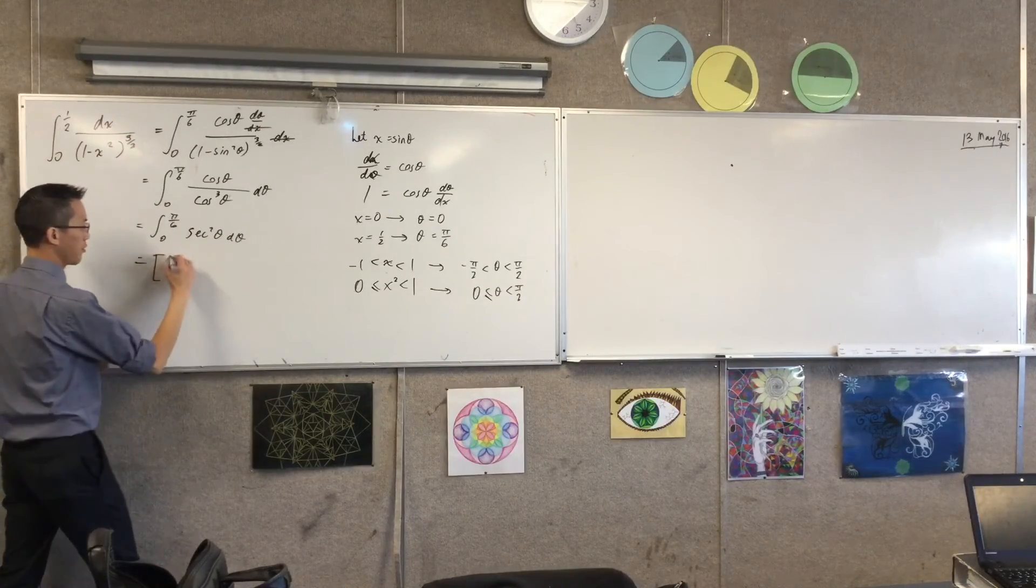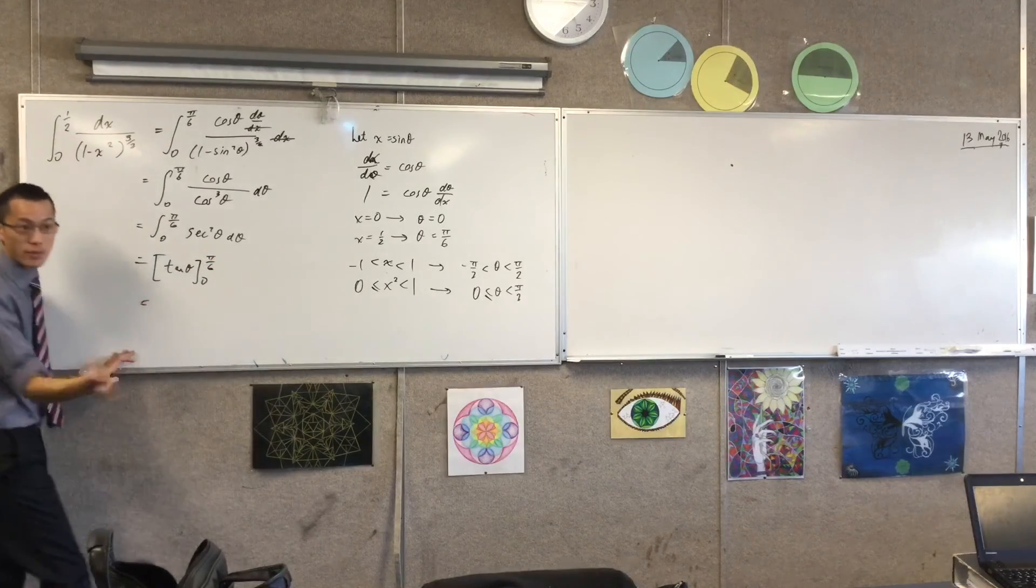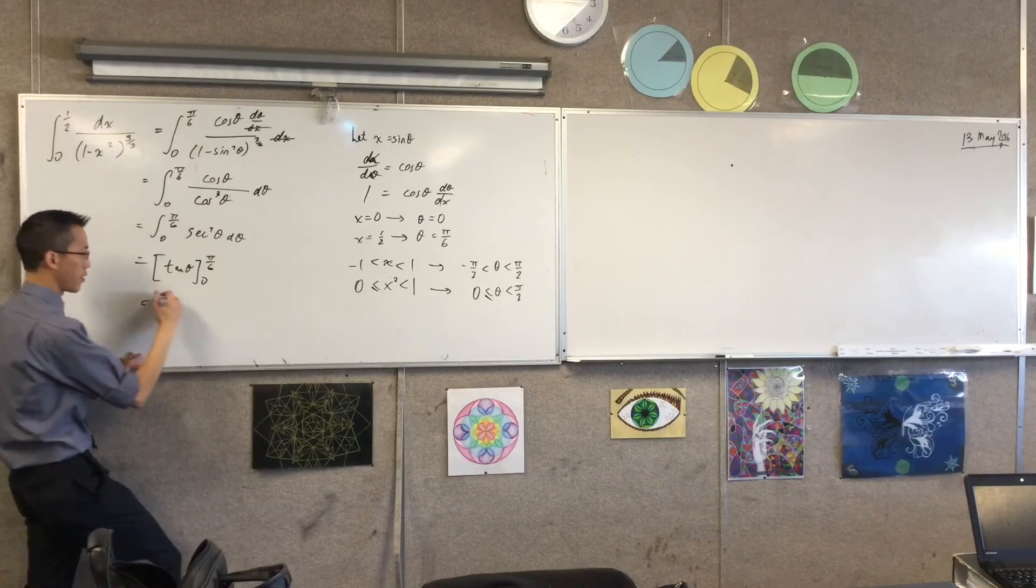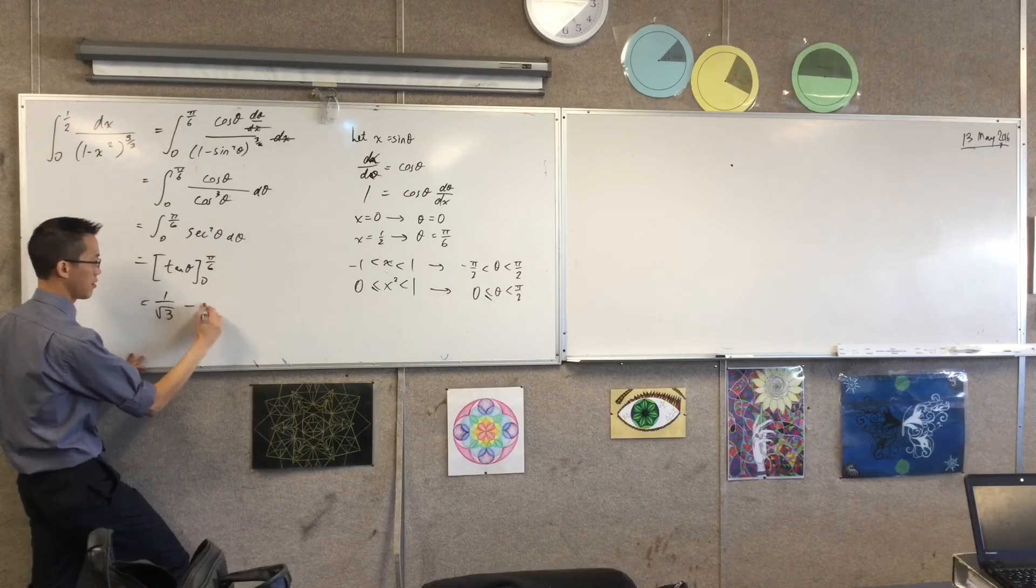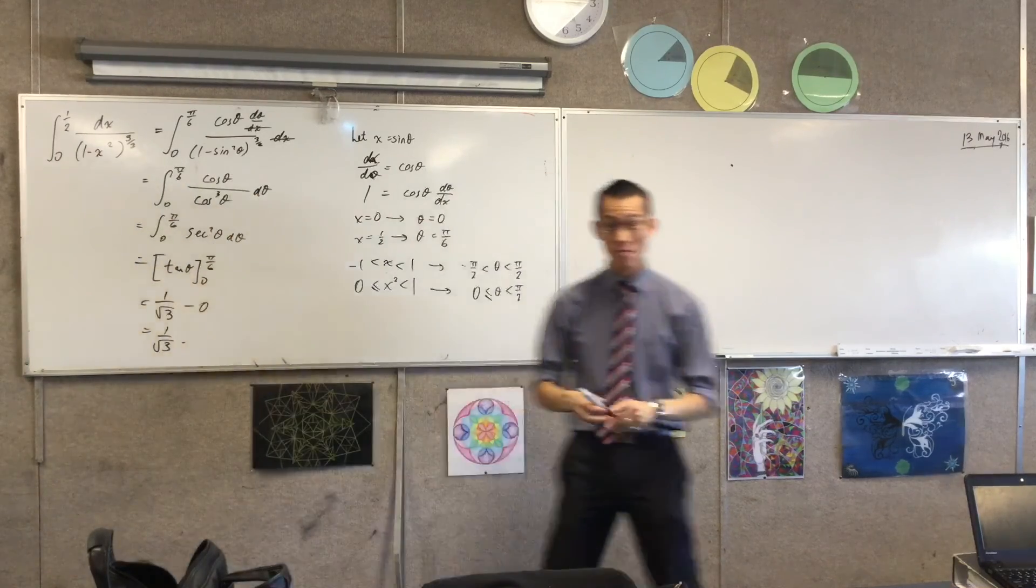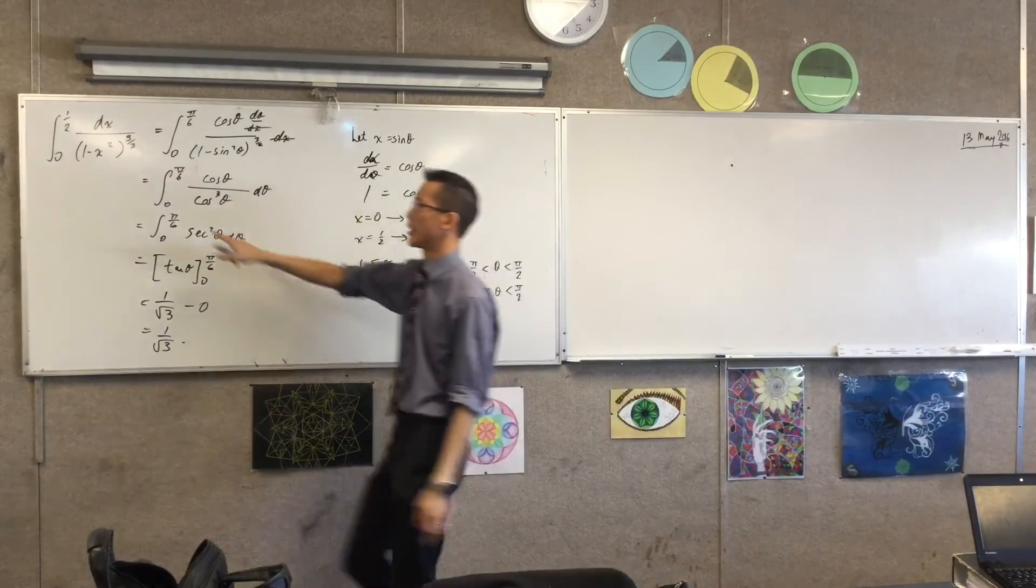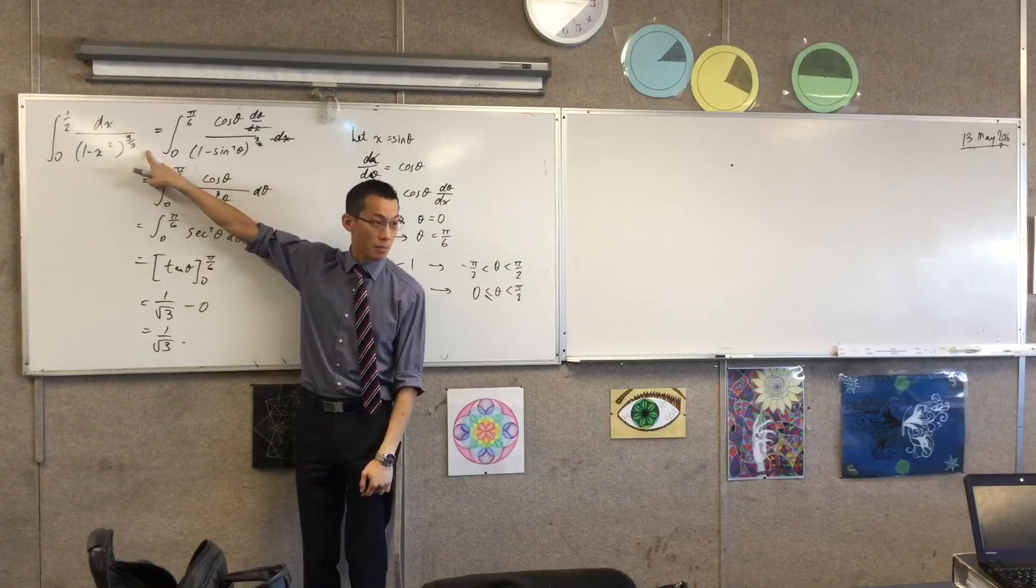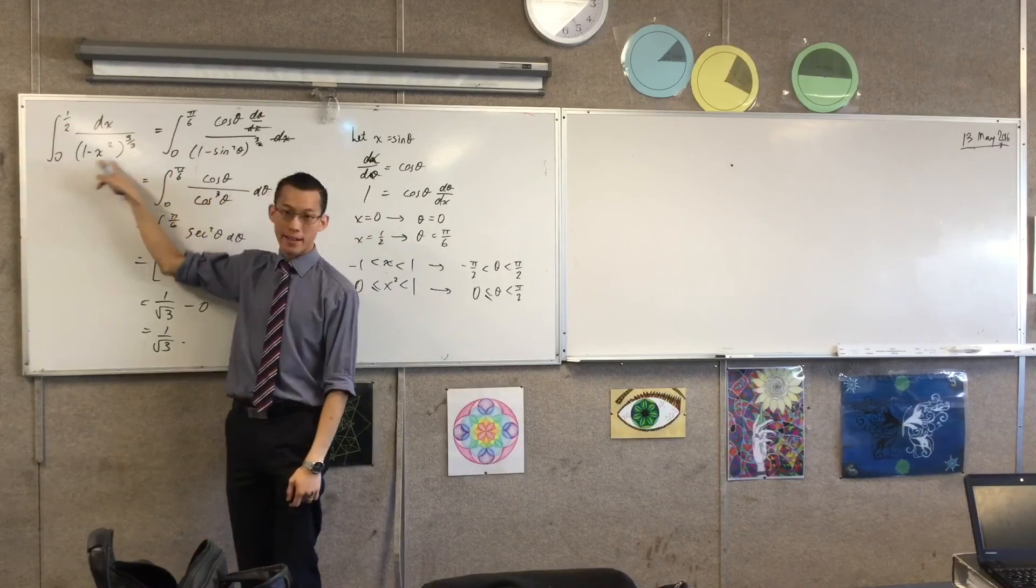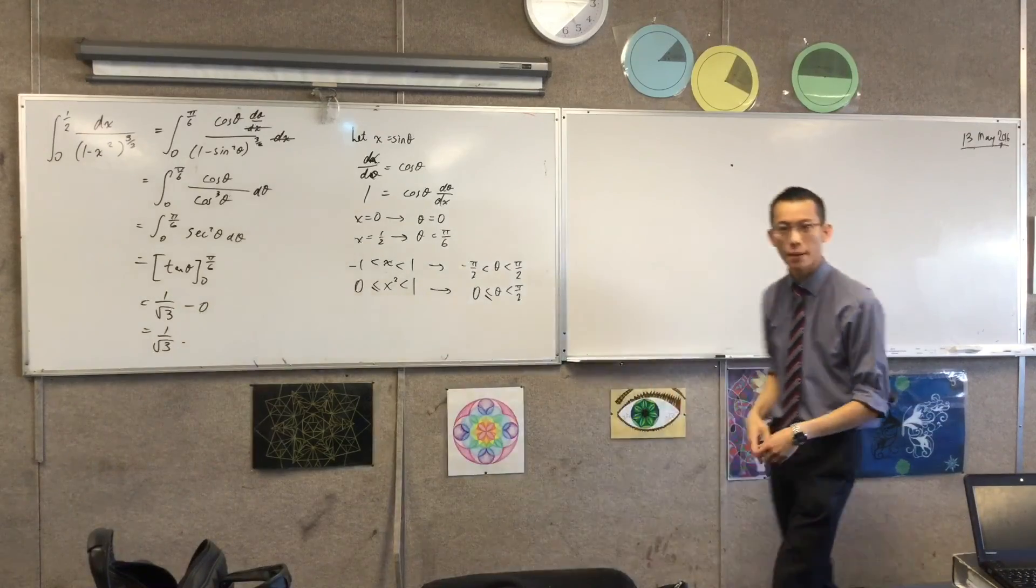Okay. So, we'll just finish it off. Tan theta from 0 to π on 6. When you evaluate it, 1 on root 3. 1 on root 3. That's easy. Okay. Do you happy with that? Keep on thinking about, like, even when you see some weirdo-looking power like that, think of trig when you see that 1 minus x squared or 4 minus x squared or anything like that.